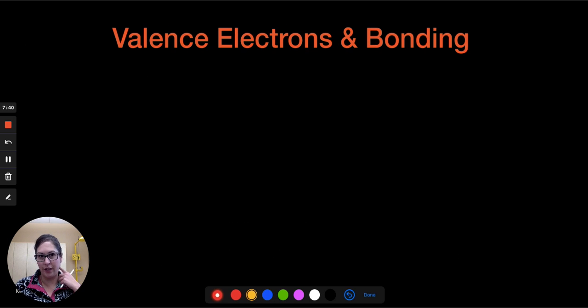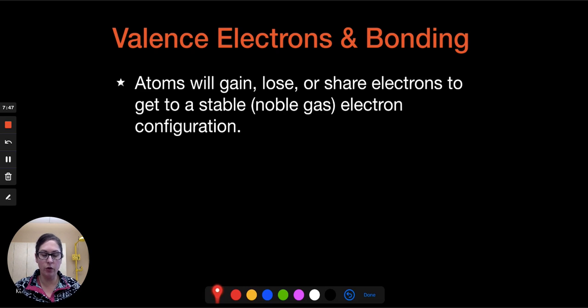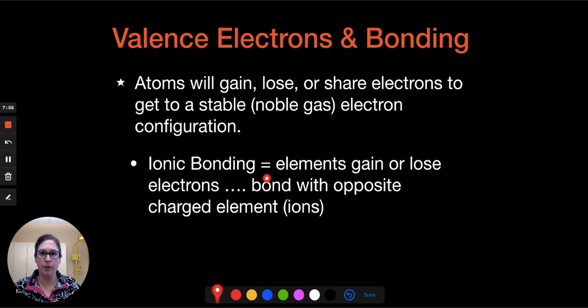So valence electrons and bonding. What happens, because these are the electrons involved in bonding. So atoms are going to gain, lose, or share electrons, again, to be stable with their electron configuration. And when they do this and they undergo ionic bonding, elements are going to gain or lose electrons, and then they bond because of the opposite charges. So we form these ions, and then because they have charges, they're going to go ahead and bond.